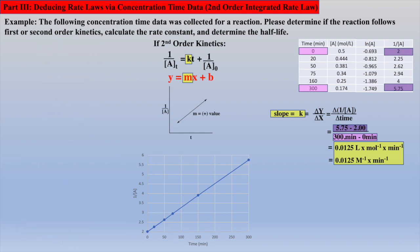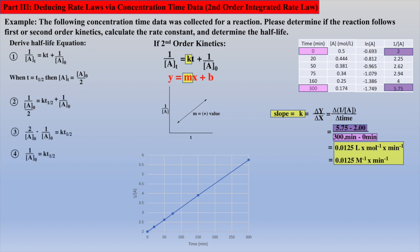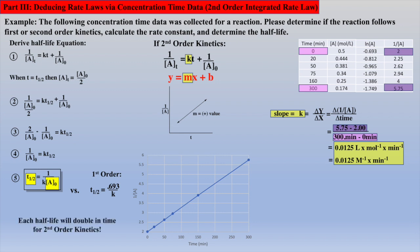To calculate the half-life for a second-order reaction, we start with the integrated second-order equation. Then making some substitutions — T½ for T, and understanding that the concentration of A at the half-life will be half the initial concentration of A — yields an equation that can be simplified and rearranged to yield our half-life equation. Interestingly, the half-life equation has a dependency on concentration. Recall for first-order kinetics the half-life has no concentration dependency. However, the inverse relationship for the second-order half-life means that each consecutive half-life will be twice the time compared to the previous half-life.